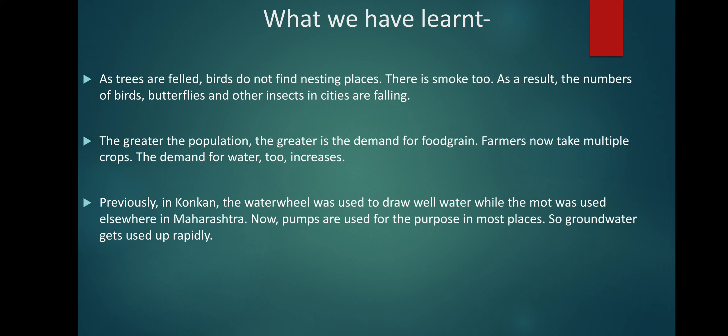So students, what have we learned today? As the population grows, the number of birds, butterflies and other insects in cities is falling. The greater the population, the greater the demand for food grains, and farmers now take multiple crops, so the demand for water also increases. Previously in the Konkan region the water wheel was used to draw well water, while the moth was used elsewhere in Maharashtra. Now pumps are used for the purpose in most places, so ground water gets used up rapidly. Please understand these concepts and revise at home. Thank you.